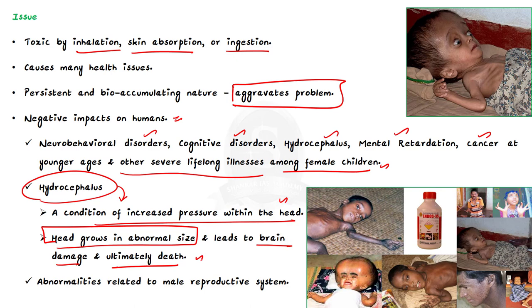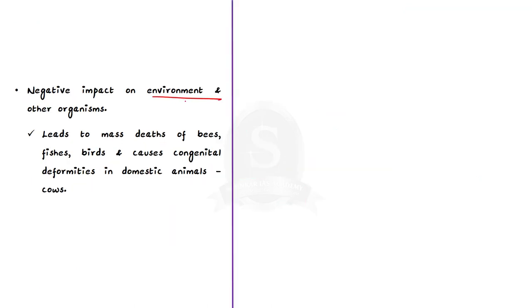Endosulfan also causes abnormalities related to the male reproductive system. Just look at this image to see the harm caused by Endosulfan. It does not stop there — it also impacts the environment and other organisms. It leads to mass death of bees, fish, and birds, and also causes congenital deformities in domestic animals.